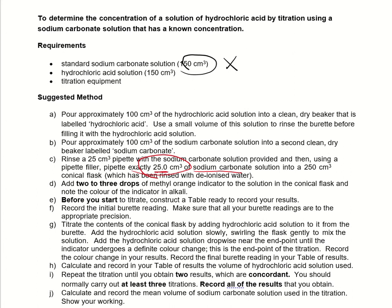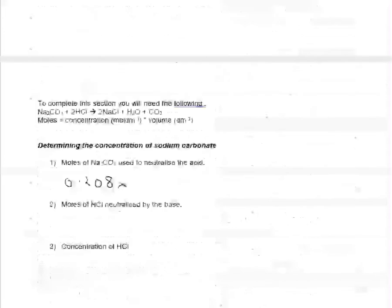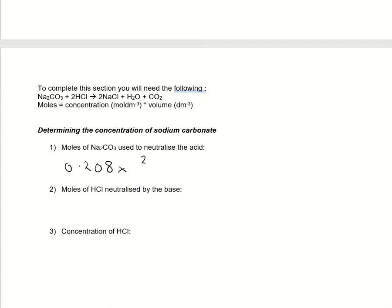So it's the 25 that you are going to be using in this calculation here. So again, 25 is in cubic centimetres. I need to convert it to dm cubed. So, 0.208 times 25 over 1,000. And that gives me 5.2 times 10 to the power of minus 3 moles.